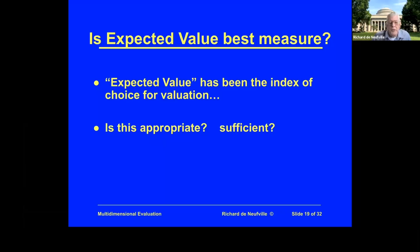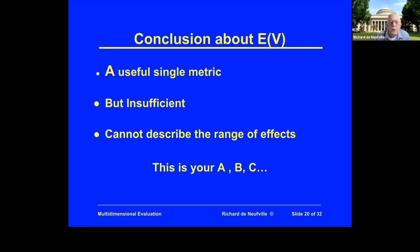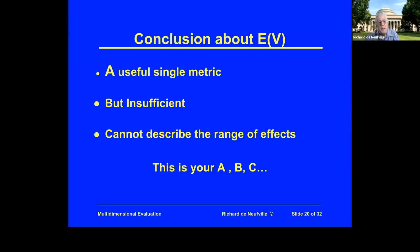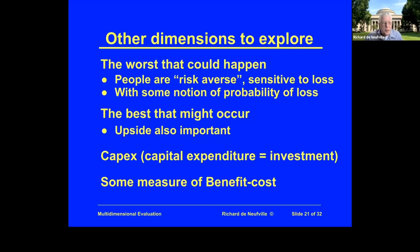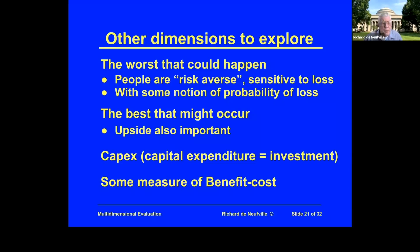Expected value by itself is just one measure. We've implicitly emphasized it as a meaningful way to talk about distributions, but it's only one of the possible ones and we need to go beyond that. Other dimensions are, for example, the worst that could happen. People are typically risk averse and sensitive to loss, so they are looking at good value on average but may also be concerned about the downside.